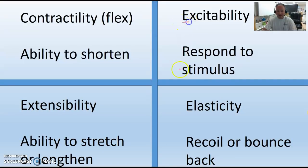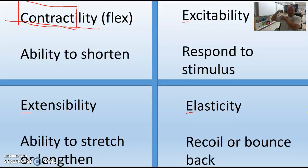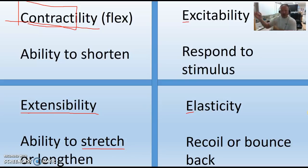They all start with the letter E, which makes it tricky. Contractility has the word 'contract' in it — it's the ability to shorten. In sports medicine we call that flexion: decreasing an angle from 180 degrees down to 90 or 45. Extensibility is the paired ability — the muscle must also be able to stretch.